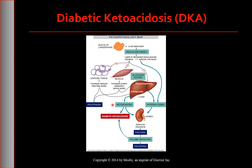Ketonuria is a process that occurs when ketone bodies are excreted in the urine. During this process, electrolytes become depleted as cations are eliminated along with the anion ketones in an attempt to maintain electrical neutrality. Insulin deficiency impairs protein synthesis and causes excessive protein degradation, resulting in nitrogen losses from the tissues. Insulin deficiency also stimulates the production of glucose from amino acids in the liver, leading to further hyperglycemia.